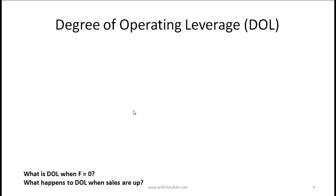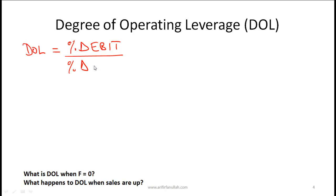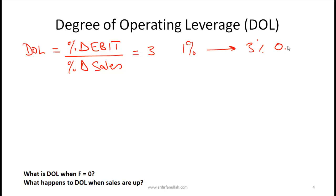Now let's talk about the concept of degree of operating leverage in more detail. Degree of operating leverage is the percentage change in EBIT or operating profit divided by the percentage change in sales. So if the degree of operating leverage of a given entity is equal to 3, this means that a 1% change in sales volume will lead to a 3% change in operating profits.